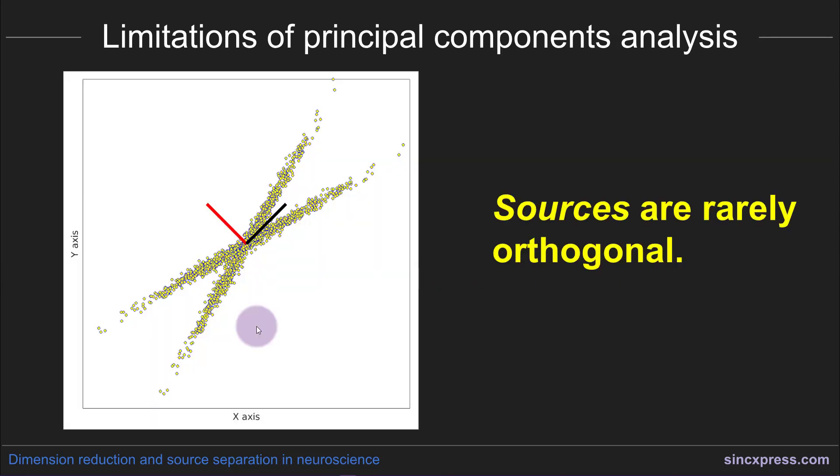One of the main limitations of principal components analysis is that the eigenvectors are forced to be orthogonal. The reason why this is a limitation of PCA for source separation is that sources in the brain are rarely orthogonal, so you're more likely to have a pattern like this that is not going to be well reflected by PCA.